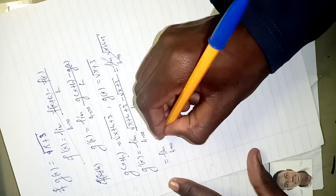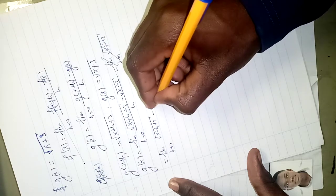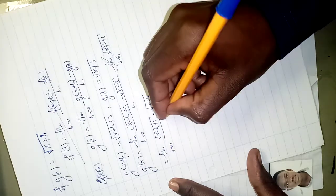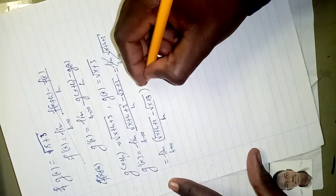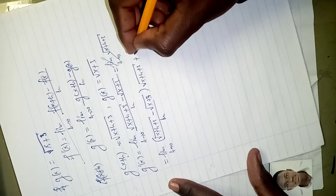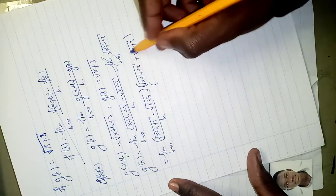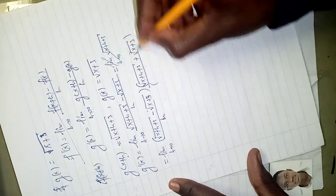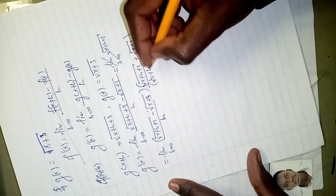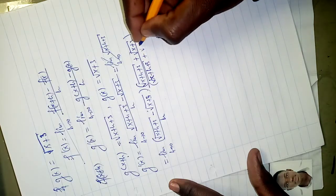We write: limit as h goes to zero of [√(x+h+3) minus √(x+3)] over h, multiplied by the conjugate [√(x+h+3) plus √(x+3)] over [√(x+h+3) plus √(x+3)]. We multiply below by the same term so as not to change the value.